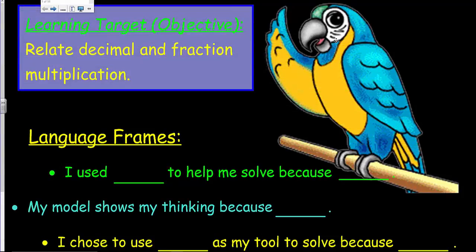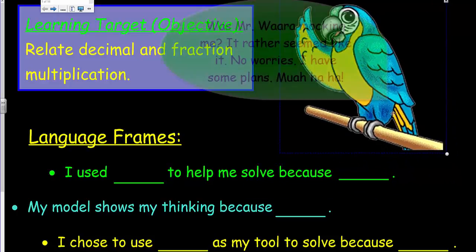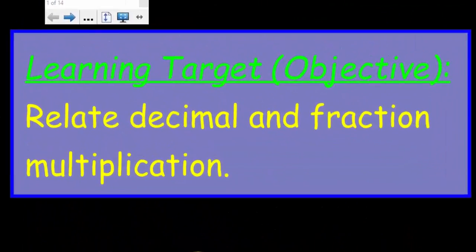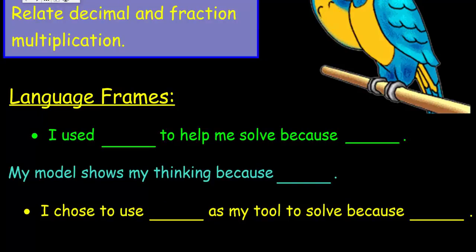Welcome to another math video with new bumper music. We have a new feature animal of the day — a parrot. Our learning target today is to relate decimal and fraction multiplication. Decimals and fractions are very much related — like brothers and sisters. We have some language frames here to help guide us in verbalizing our mathematical reasoning when speaking in class.